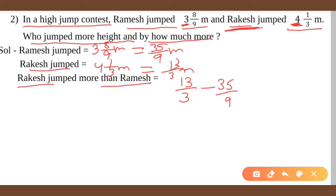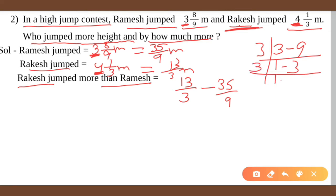In comparison, the bigger number is 13 by 3 because the whole number 4 is greater than 3. Some students misunderstand and think 35 by 9 is bigger. Both are unlike fractions, so we find LCM of 3 and 9. Dividing by 3, we get LCM as 9. Now we convert 13 by 3.